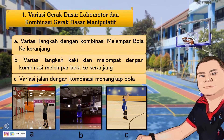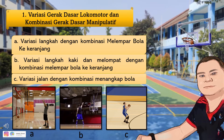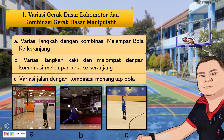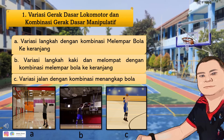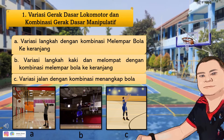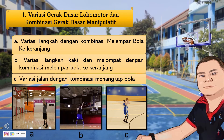Yang B: variasi langkah kaki dan melompat dengan kombinasi melempar bola ke keranjang. Melempar bola ke keranjang basket juga dapat diawali dengan melangkah dan melompat. Melangkah dilakukan sebagai awalan dan dapat dilakukan dengan cepat atau lambat. Pada gambar B terlihat seseorang melompat kemudian mencoba untuk melempar bola ke keranjang.